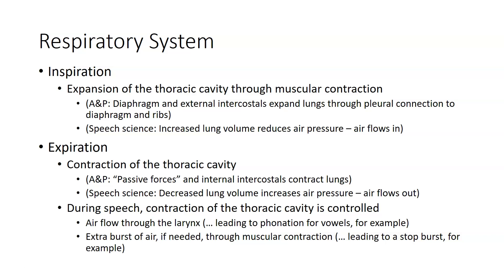During expiration, the thoracic cavity is contracted. This consists primarily of passive forces — the tissues have been stretched out, the ribs have been moved, and those things all want to return to their neutral resting state. We can create additional contraction using internal intercostal muscles. When we decrease the lung volume, we increase the air pressure on the air inside the lungs, and so that air flows out to balance pressure with atmospheric pressure.